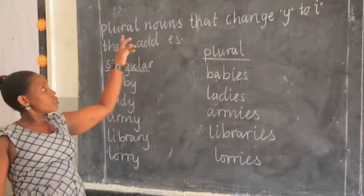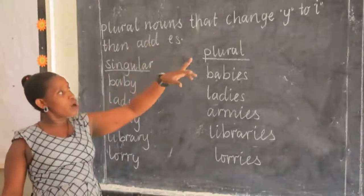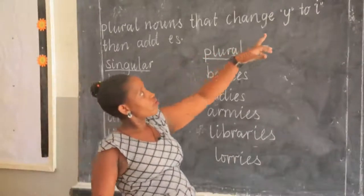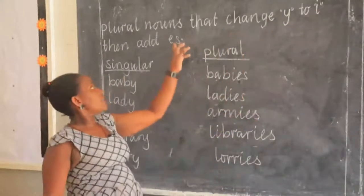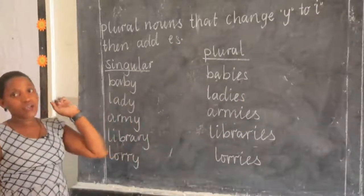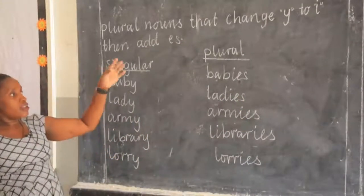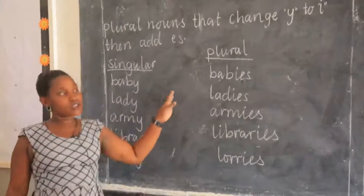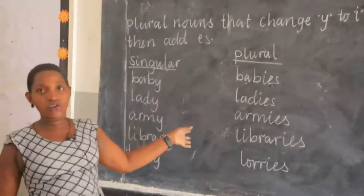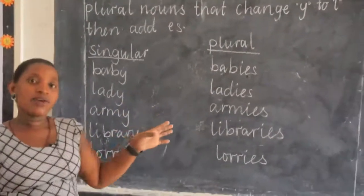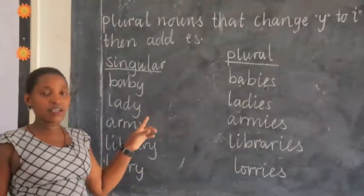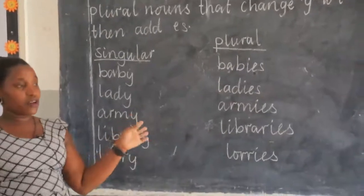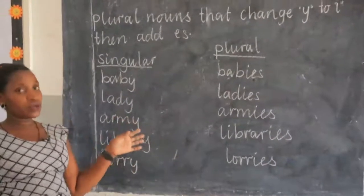Today we are looking at plurals that change Y — that means nouns that end with Y. They change Y to I and then we add ES. These plurals are very many. When I list examples here, it doesn't mean those are the only ones. We have very many of these plurals; I just give some and leave others. Whenever you find them, you still look at them.